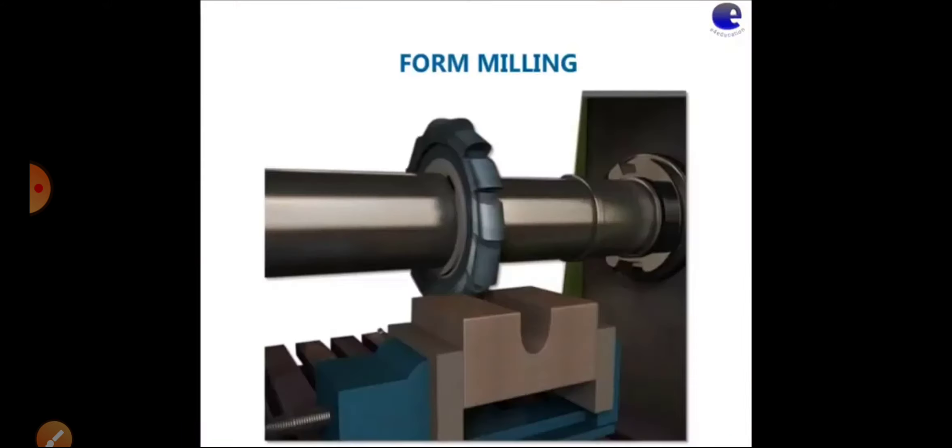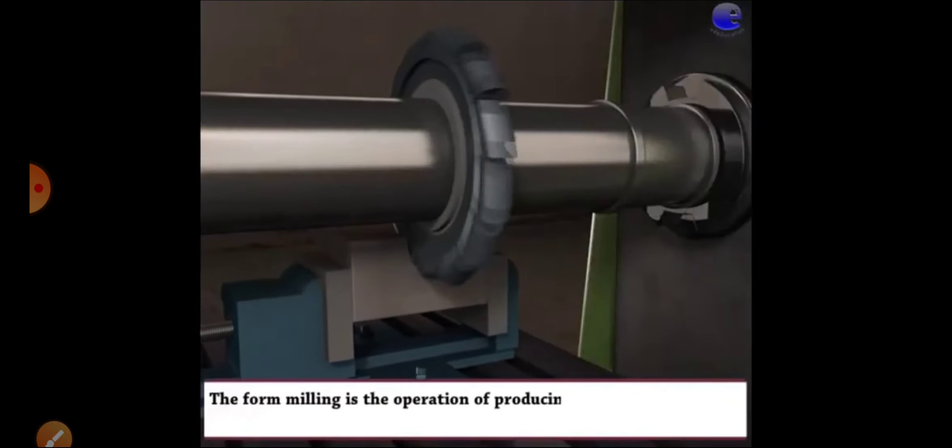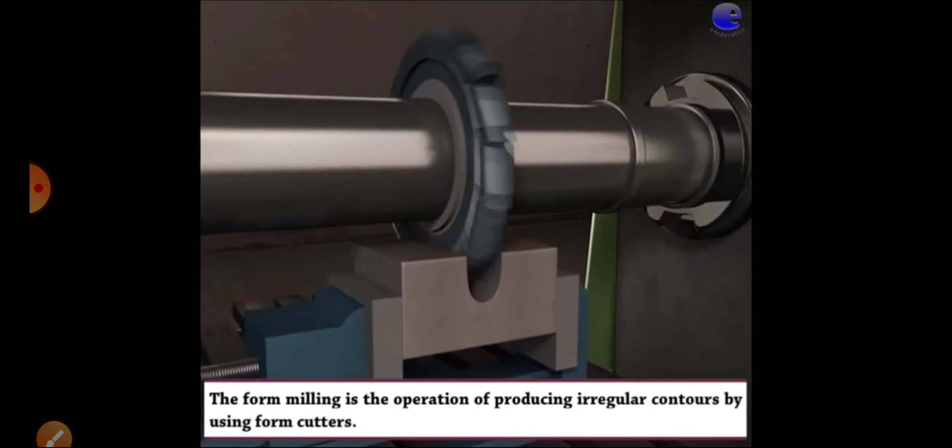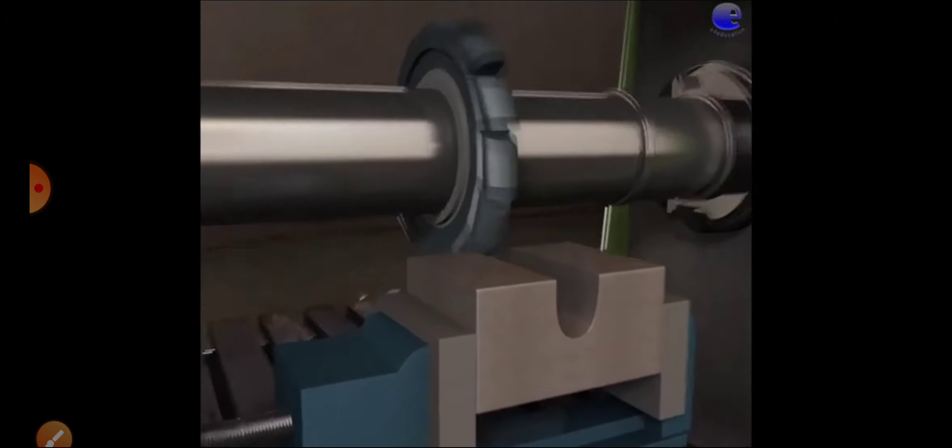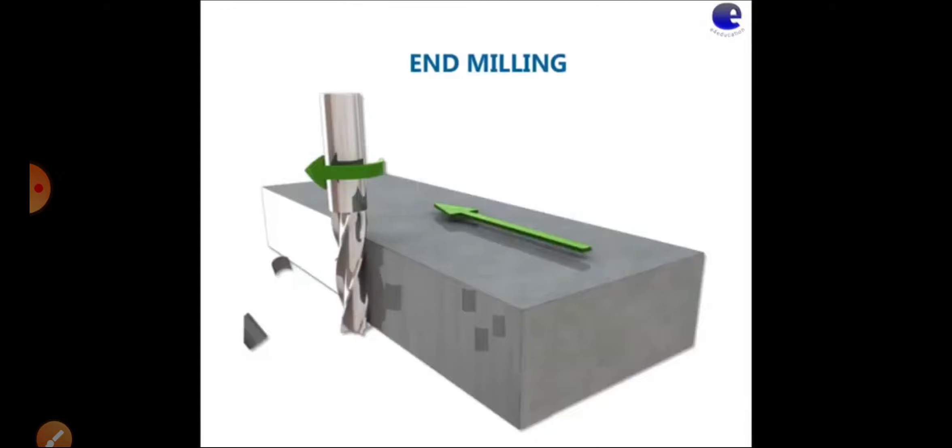Next is form milling. Here we use a convex type cutter which creates a concave shape to generate an irregular shape. This comes under form milling. Next is end milling.